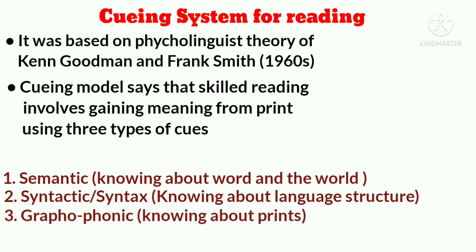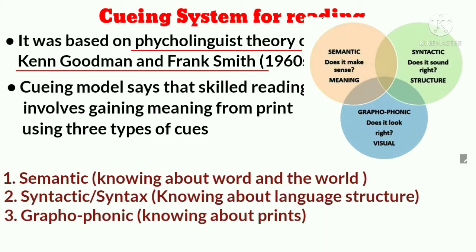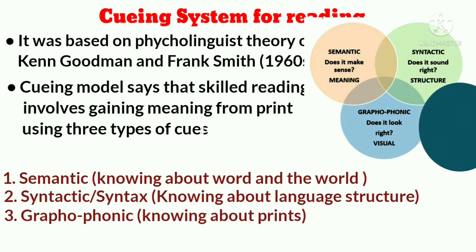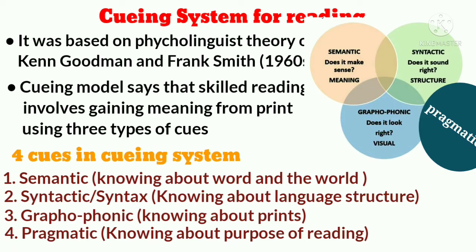The three queuing system for reading is based on the psycholinguistic theory of Ken Goodman and Frank Smith. They introduced three cues: semantic — knowing about words and the world; syntactic — knowing about language structure; and graphophonic — knowing about print, where 'grapho' refers to symbol and 'phonic' refers to sound. Later, one more cue was added: pragmatic — knowing about the purpose of reading. So the four cues are semantic, syntactic, graphophonic, and pragmatic.